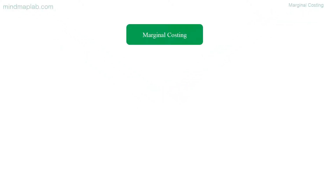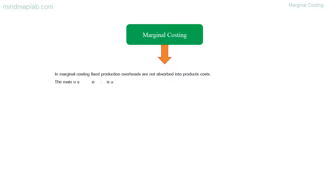Hello there. Today let's learn how to mind map marginal costing. In marginal costing, fixed production overheads are not absorbed into product costs. The main uses are planning, forecasting, and decision-making.